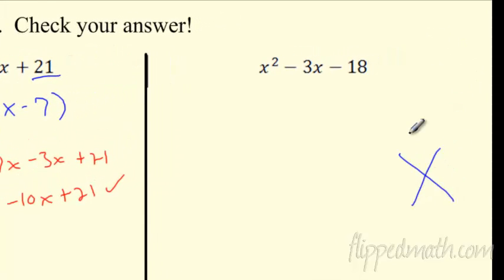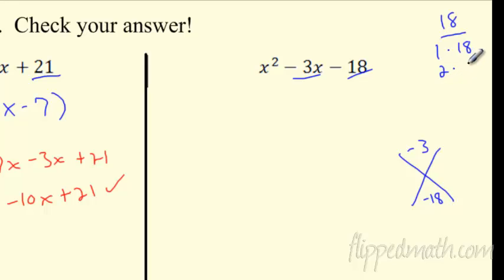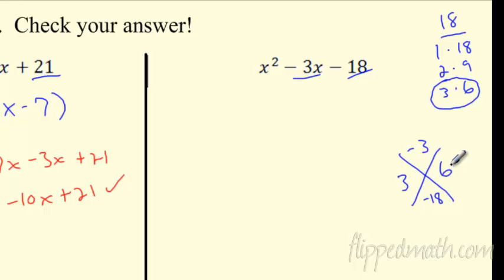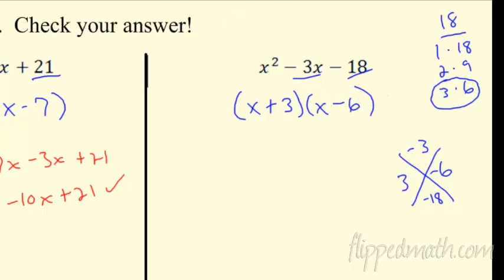I like this little magic X. What multiplies to negative 18 and adds or subtracts to negative 3? What gives me 18? 1×18, 2×9, 3×6. Which one will add or subtract to 3? It's 3 and 6 — but be very careful with signs. 3 times 6 is not negative 18, so one has to be negative. It's got to be the 6, because 3 minus 6 is negative 3. So this is x plus 3 times x minus 6.